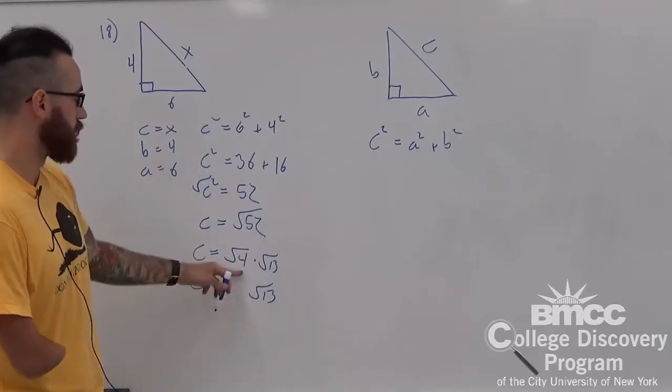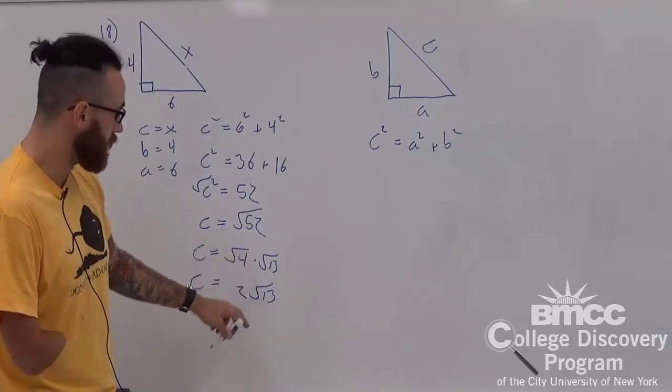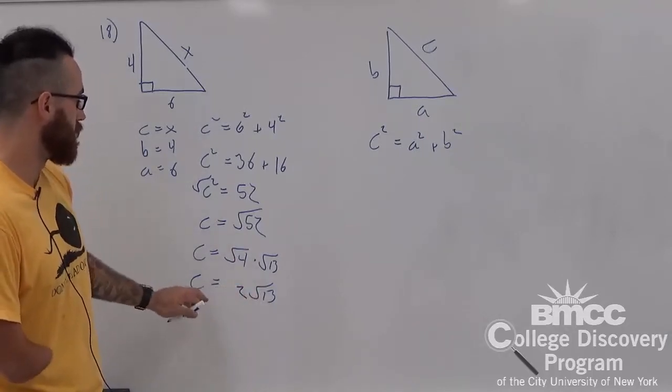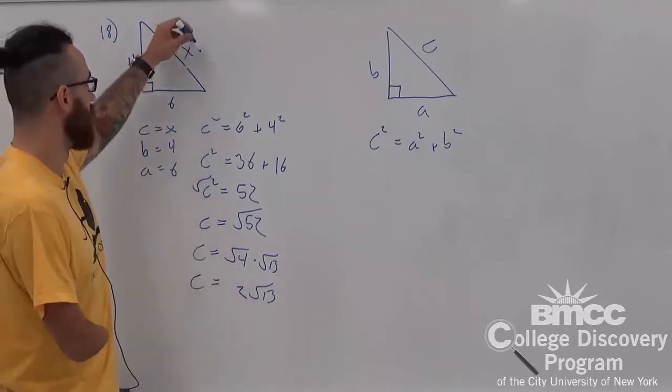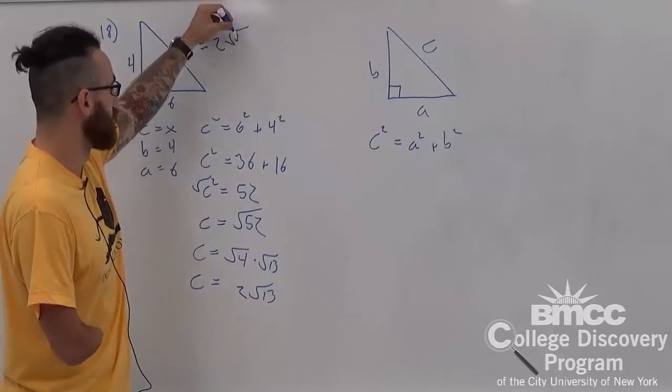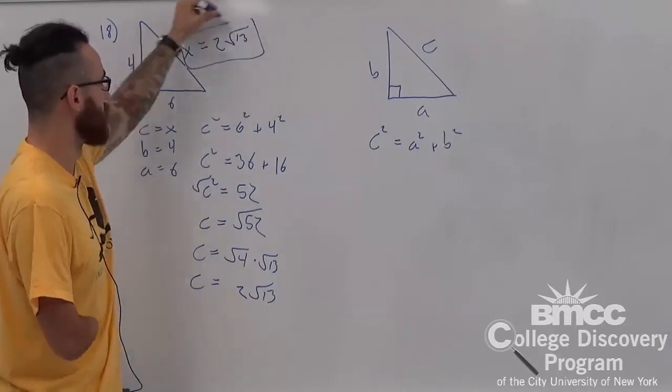4 square root of 4 is 2. 2 times 2 is 4. So, there's nothing further that can be done. That's our c. So, therefore, x is equal to 2 square root of 13. And that's our final answer.